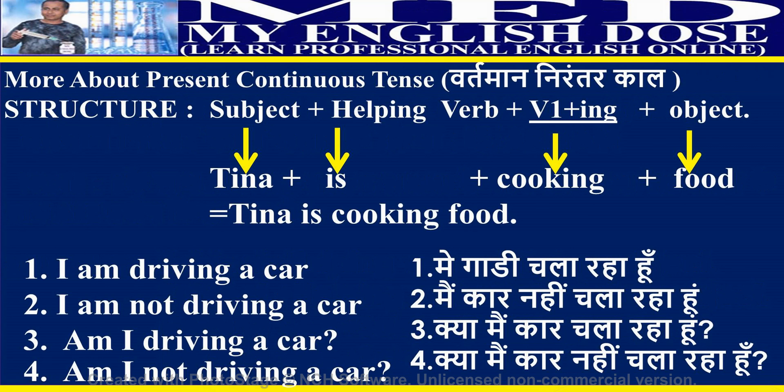In the given sentence, Tina is the subject, 'is' is the helping verb, 'cooking' is the verb (first form plus -ing), and 'food' is the object. Examples: Positive — I am driving a car. Negative — I am not driving a car. Interrogative — Am I driving a car? Interrogative negative — Am I not driving a car?